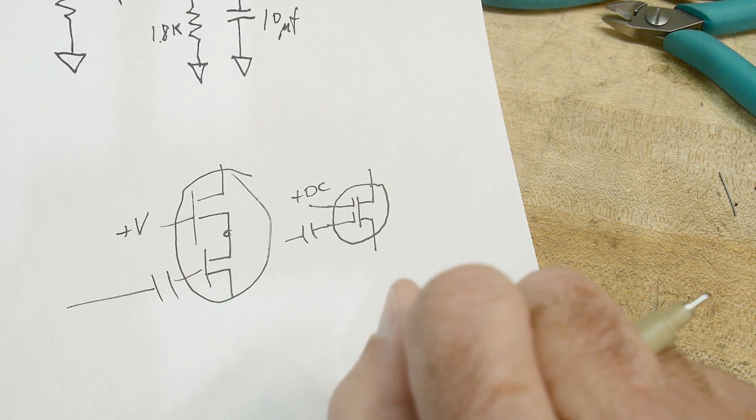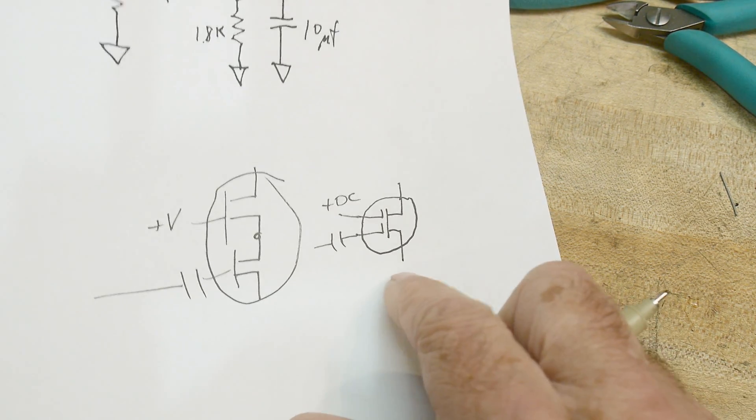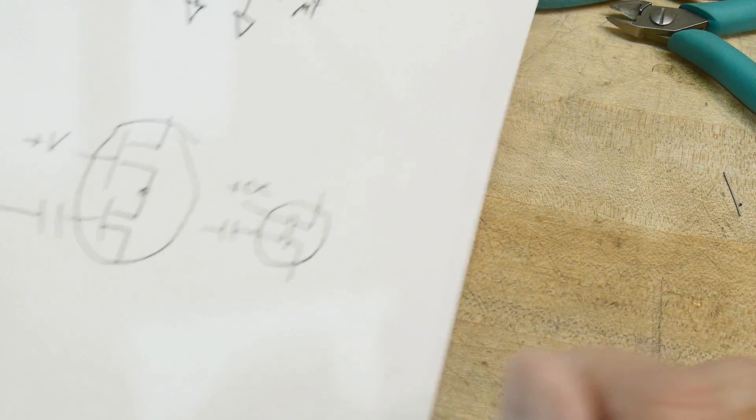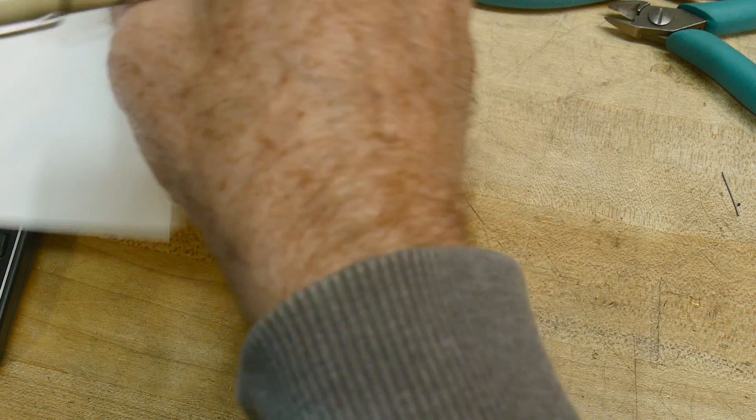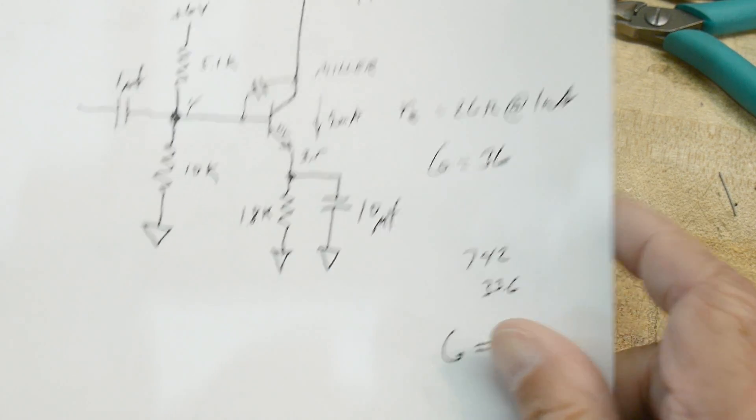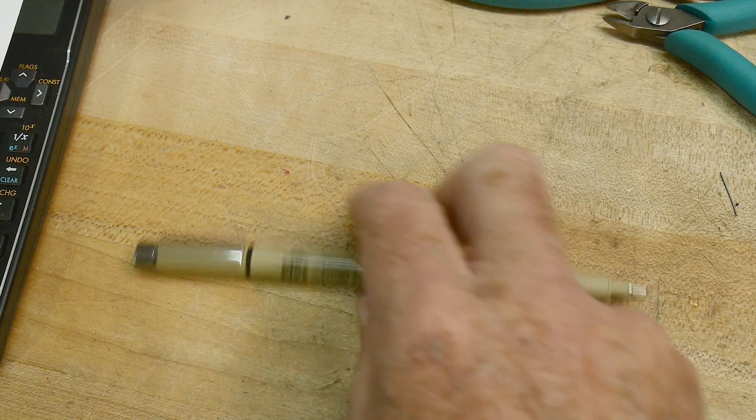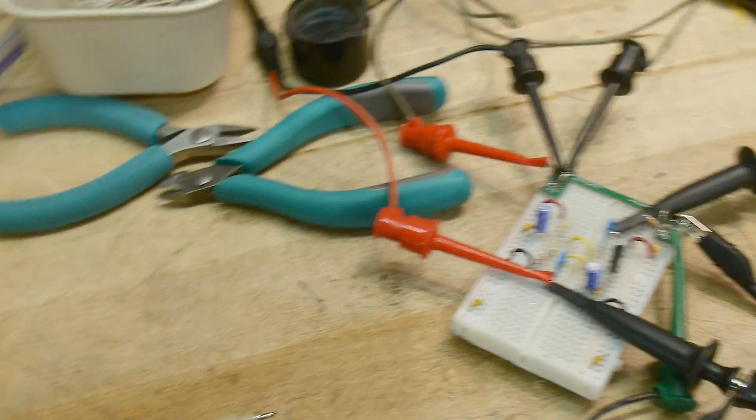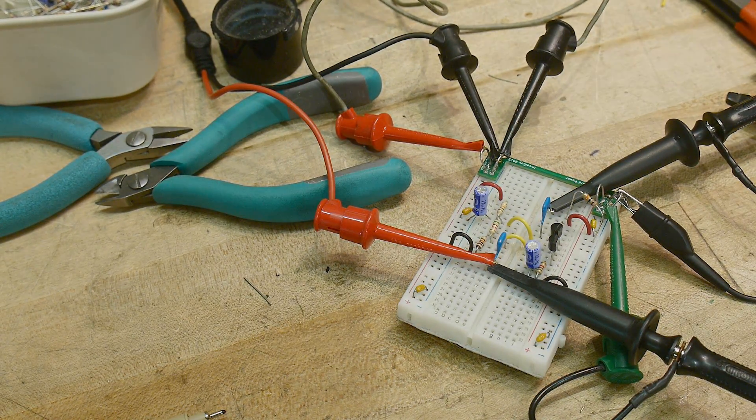All right. I think that's enough for cascode amplifiers. There's a whole lot of math that you could go into and stuff, but that's outside of my comfort zone and what I want to teach here on my channel. So yeah, there we go. Cascode amplifiers and why they're faster.